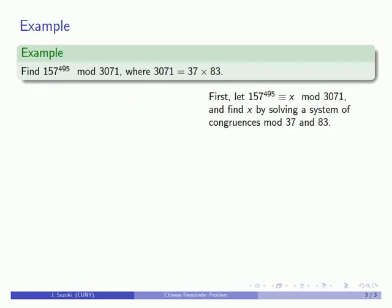First I'll let 157 to the 495 be congruent to x mod 3071, and I'll find x by solving a system of congruences mod 37 and 83.